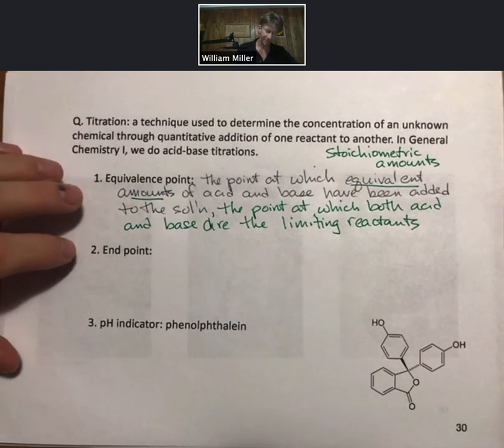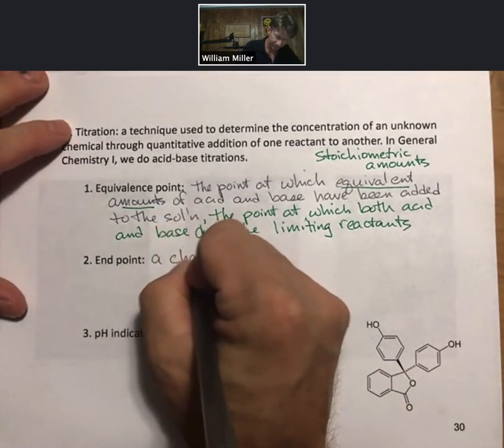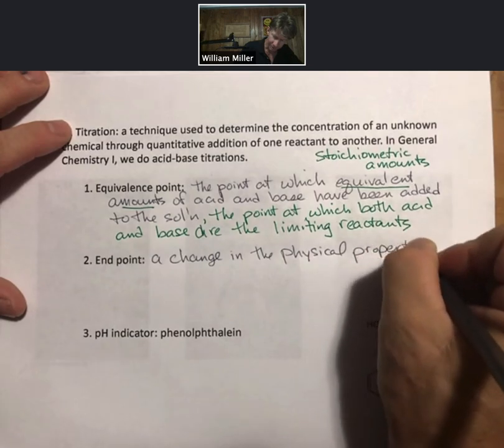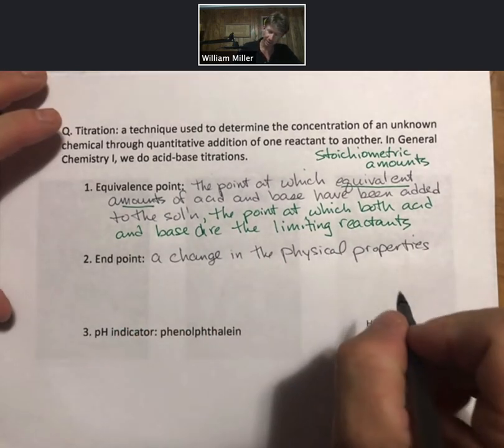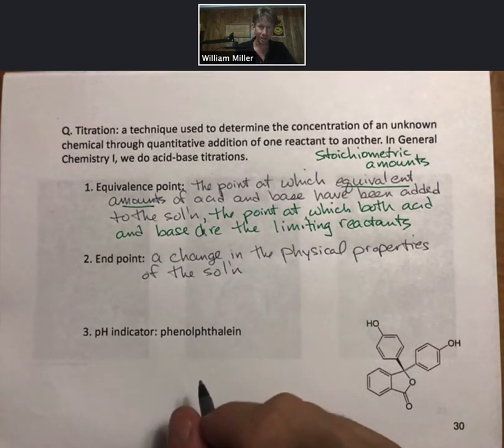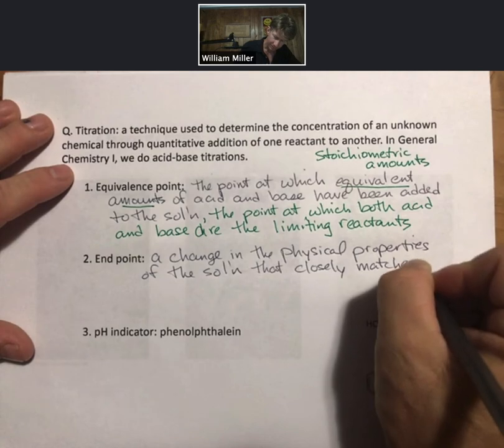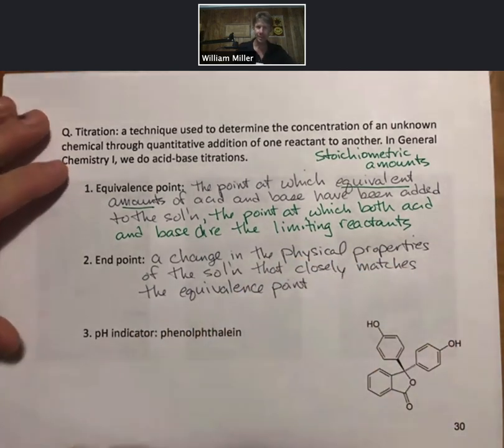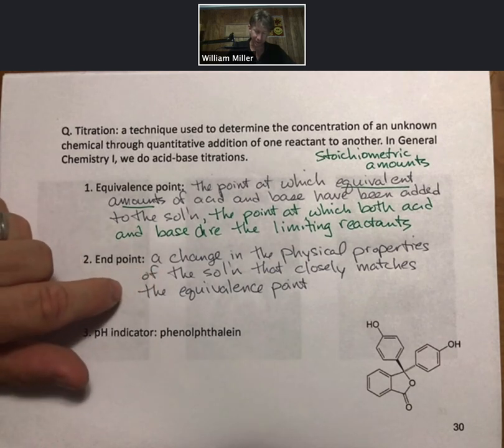The end point, on the other hand, is a change in the physical properties of the solution, where physical properties could be color or conductivity. For us, it's going to be color. A change in the physical properties of the solution that closely matches the equivalence point. And there's actually an art and a science to picking an end point that closely matches the equivalence point.